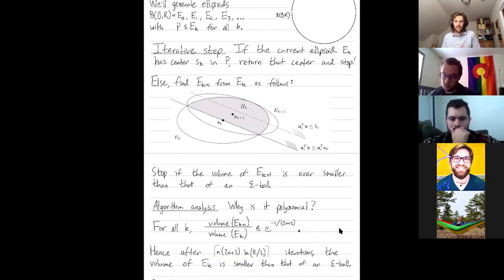Yeah. In the iterative step, we're finding a constraint that separates SK from the feasible region. Do we have to worry about cases where there may be multiple constraints that are sort of separating SK from the feasible region? Or can we just pick one arbitrarily?